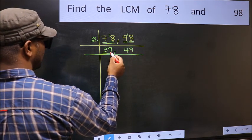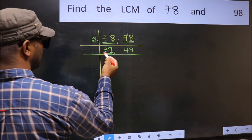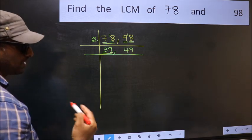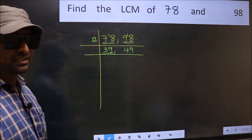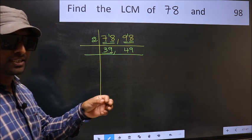Now we have 39. Last digit 9, not even, so not divisible by 2. Next, prime number 3. To check divisibility by 3, add the digits.